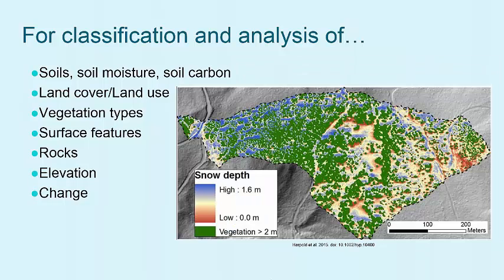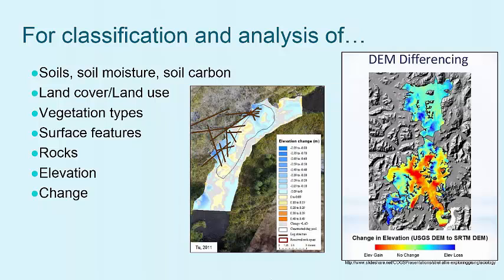The next example demonstrates the use of remote sensing imagery to classify land cover — in this case, snow depth and vegetation. Finally, creating digital elevation models, or DEMs, and comparing them over different time periods enables us to measure and monitor changes in land surface elevation, otherwise known as DEM differencing or change detection.